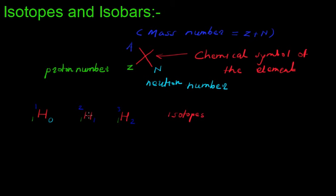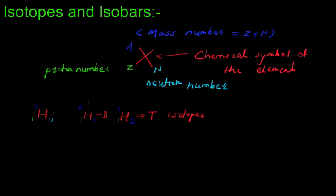Hydrogen-2 is generally known as deuterium and is denoted by the letter D. Hydrogen-3 is generally known as tritium and is denoted by the capital letter T. These isotopes are important in chemistry; for example, hydrogen-2 is useful for tracing purposes.